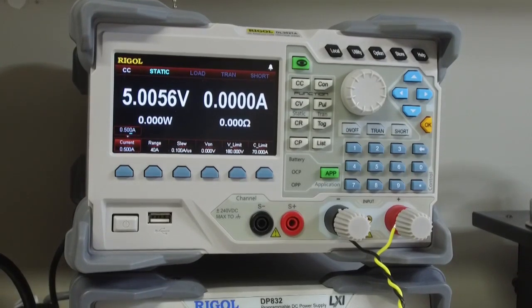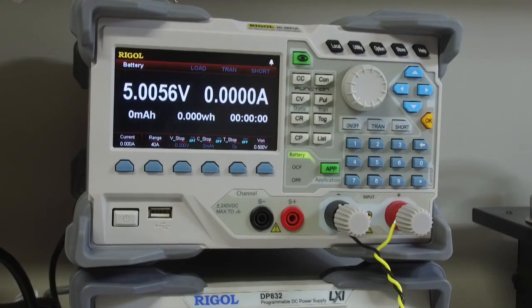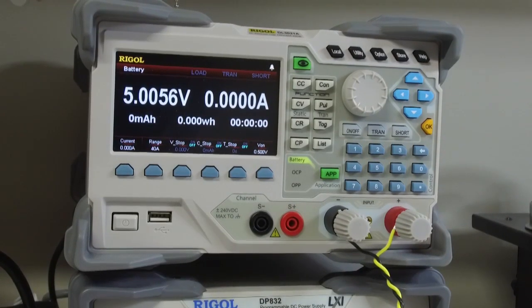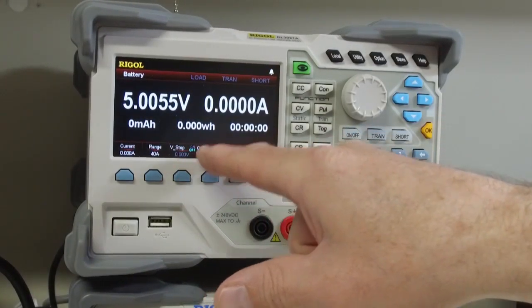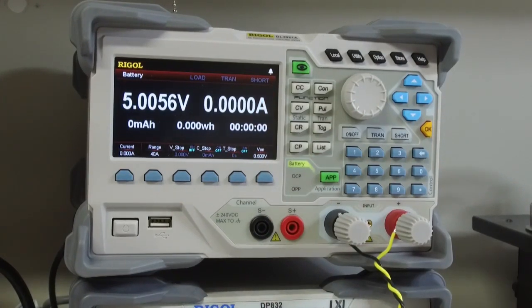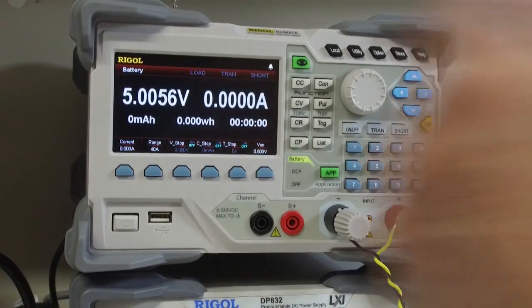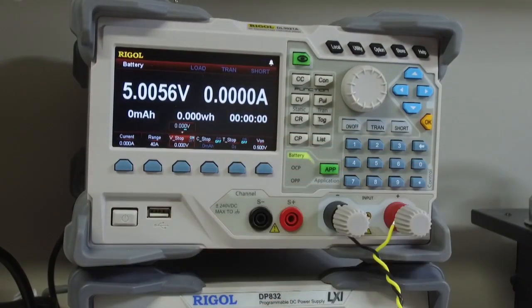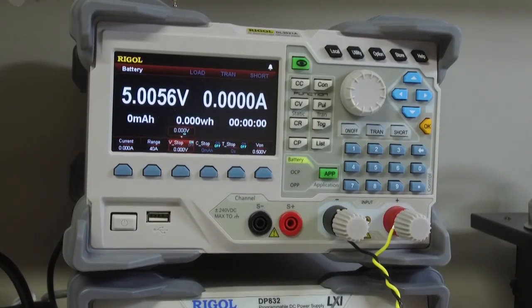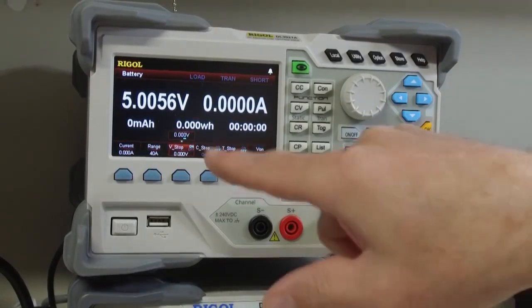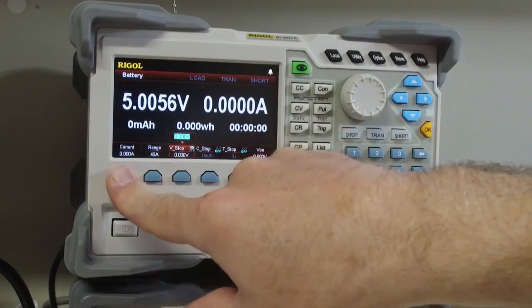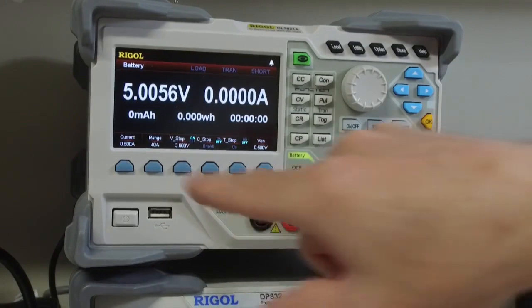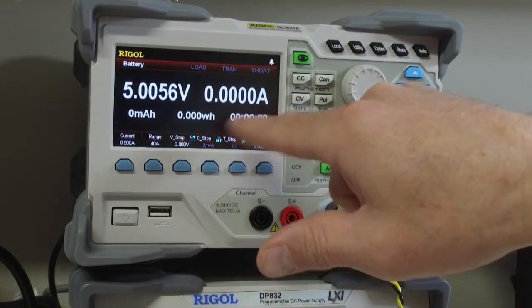Another feature that I use quite often is the battery application. So what this is going to do for me is it will accumulate the battery capacity. And I can choose to stop the test at a predetermined voltage or current or time. So say for example, I'm testing a single cell lithium battery. I don't want to discharge the battery all the way down to zero because that can be dangerous.